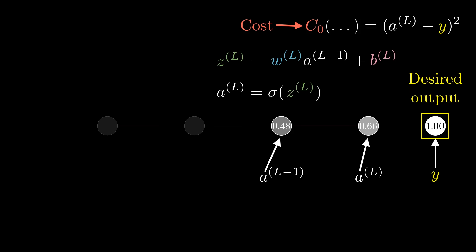So this is a lot of terms, and a way that you might conceptualize it is that the weight, the previous action, and the bias, all together are used to compute z, which in turn lets us compute a, which finally, along with the constant y, lets us compute the cost.